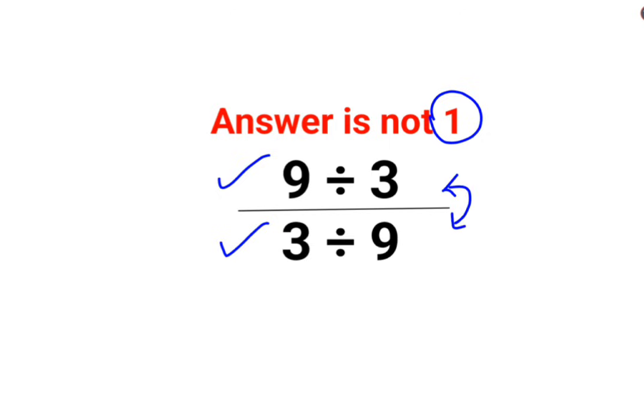So first let's understand what is the numerator. 9 divided by 3 is 3, divided by, because we have a fraction, and 3 divided by 9 is 1 upon 3.